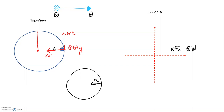Coming back to our free body diagram — the positive T direction is tangential, and the positive R direction is inward. We have acceleration in the positive R direction, which means we need a net force in the positive R direction. That force is static friction. So our free body diagram is now complete.